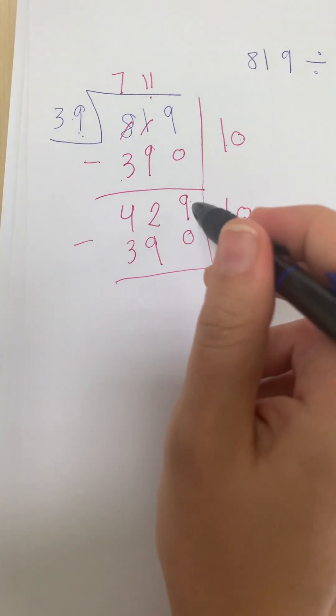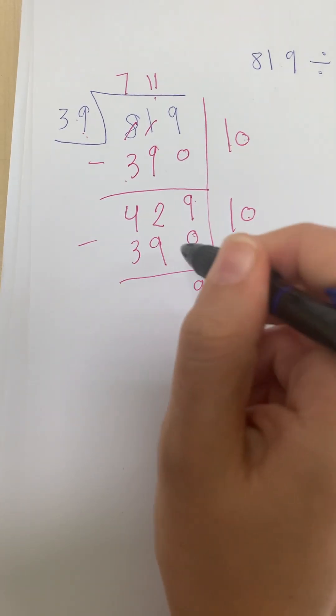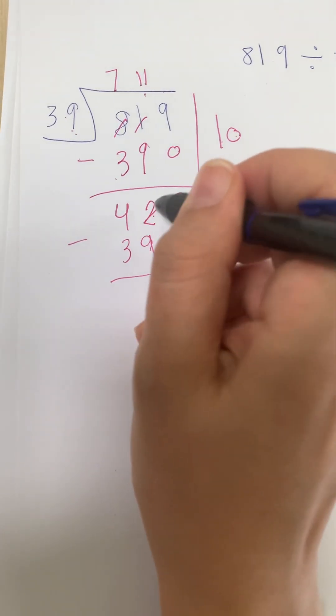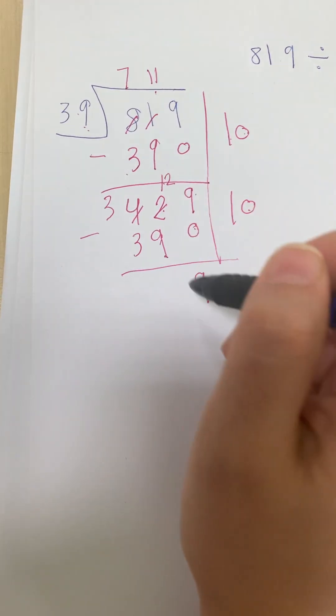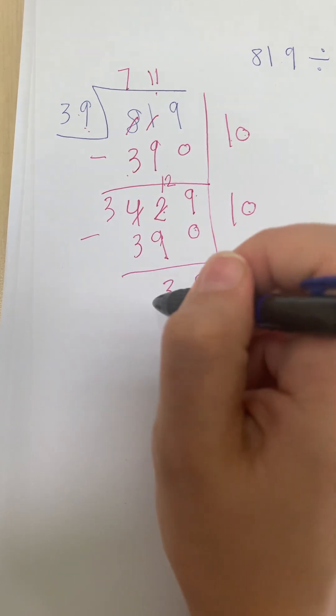Minus again. 9 minus 0 is 9. 2 minus 9, I can't. This becomes 12 and this becomes 3. 12 minus 9 is 3. 3 minus 3 is 0.